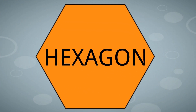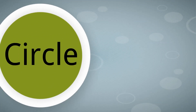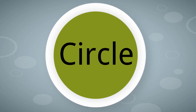Next shape is hexagon. H A X A G O N. Hexagon. Next is circle. C I R C L A. Circle.